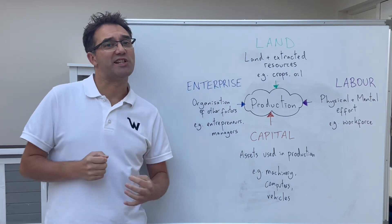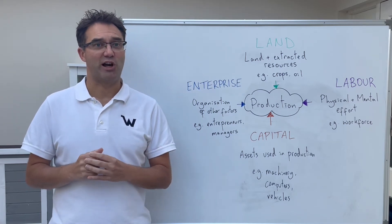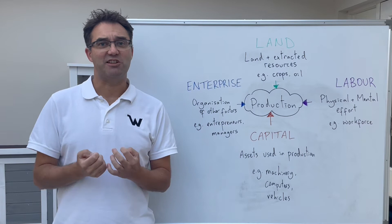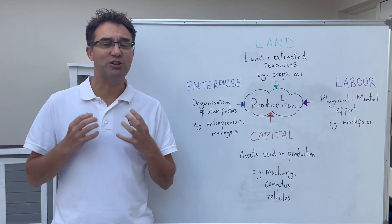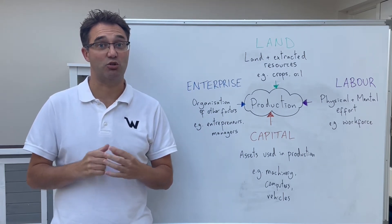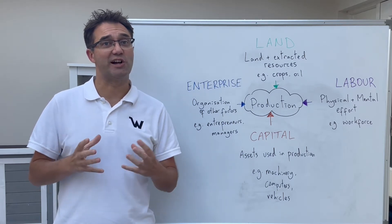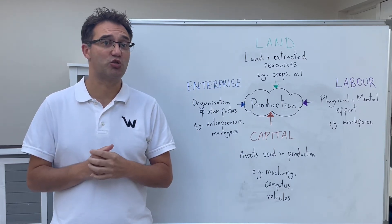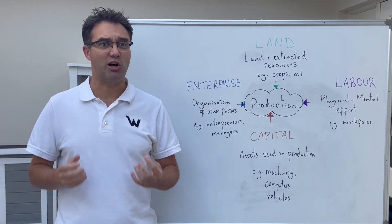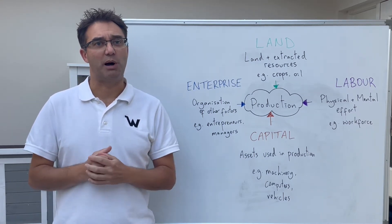Enterprise is the final factor and it's the combining of the other three factors of production. It's a human factor — putting together the other resources and taking the risk of putting that business idea into practice to create goods and services. The person who organises this is known as an entrepreneur, and examples include business owners and managers, who are rewarded by profit.